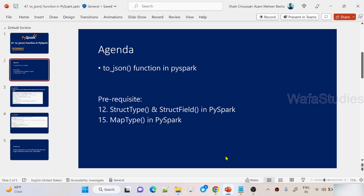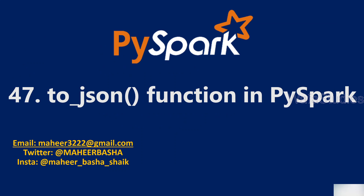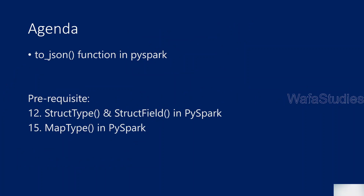Hi friends, welcome to UFO Study's YouTube channel. This is part 47 in the PySpark playlist. In this video we are focusing on the to_json function in PySpark. Before watching this video I would encourage you to watch my part 12 and part 15 videos in the PySpark playlist, where I explained map type and structure type. Also please watch part 45 and part 46 videos, which cover the from_json function. If you watch all these videos, you will easily understand what the to_json function actually does.